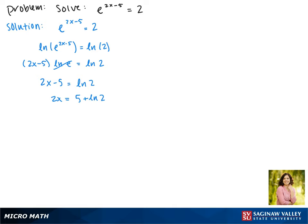And dividing both sides by 2, this gives us x equals 5 plus the natural log of 2 over 2. This is the solution to our equation.